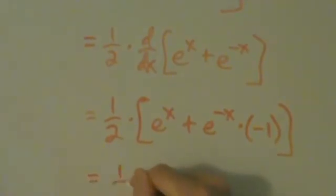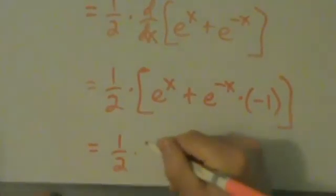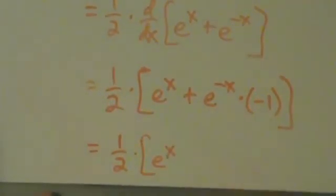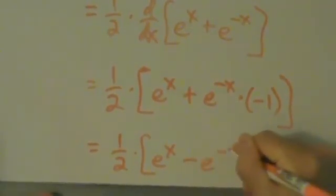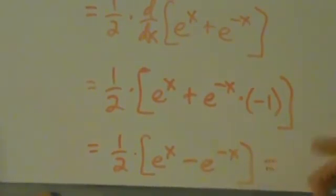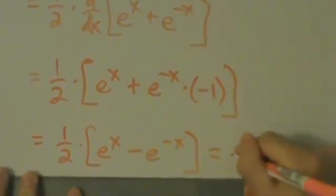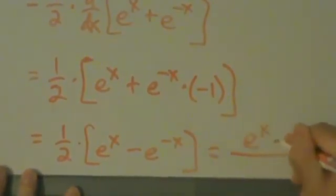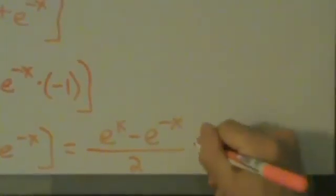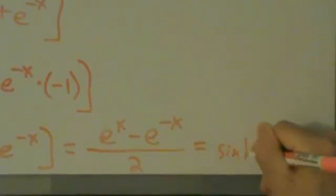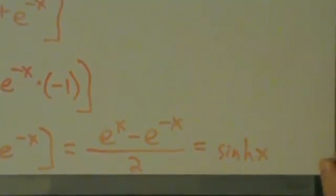So when we simplify, we get one half times e to the x plus e to the negative x times negative 1, which means minus e to the negative x. Another way to write that is e to the x minus e to the negative x all over 2. And that is the hyperbolic sine, sinh of x. That's the proof that the derivative of hyperbolic cosine is equal to the hyperbolic sine.